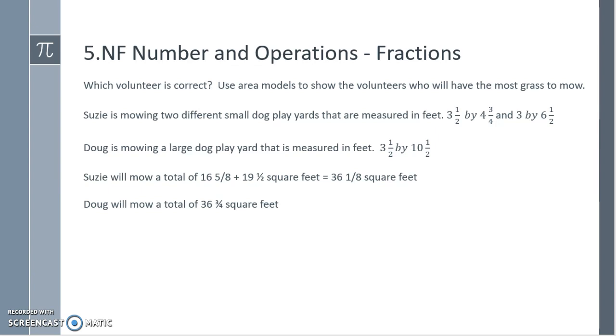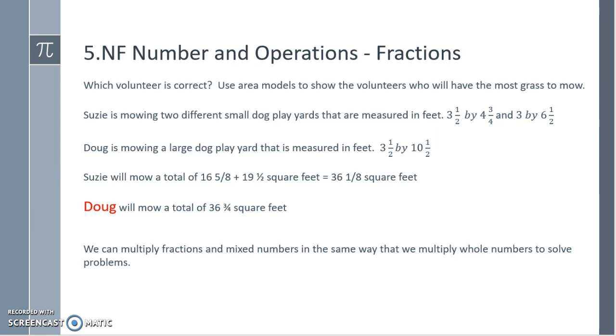Susie will mow a total of 16 5⁄8 plus 19 1⁄2 square feet for a total of 36 1⁄8 square feet, where Doug will mow a total of 36 3⁄4 square feet. It looks like Doug will mow a larger area than Susie. So we can multiply fractions and mixed numbers in the same way that we multiply whole numbers to solve problems.